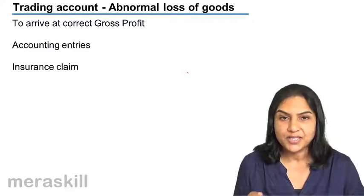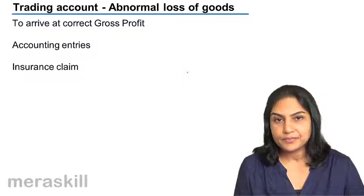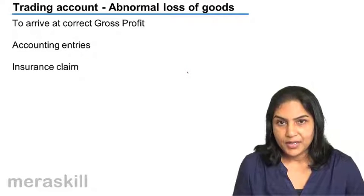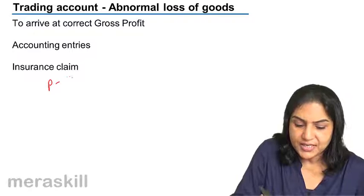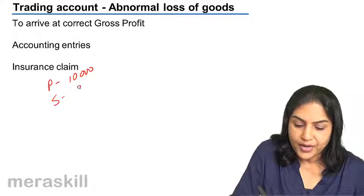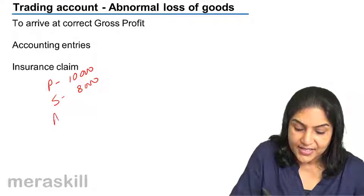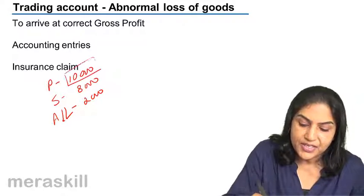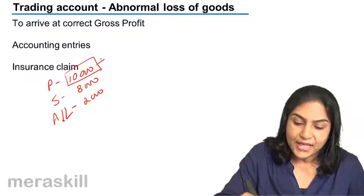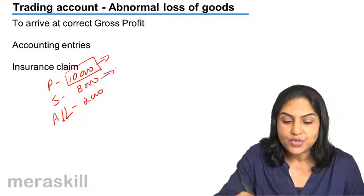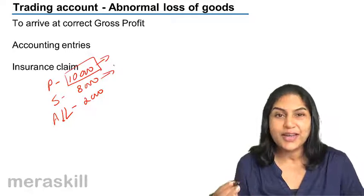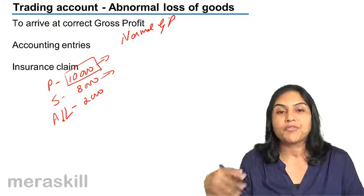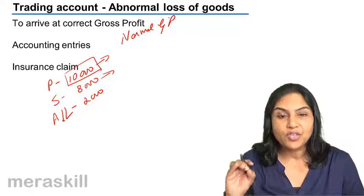Gross profit — how do we ascertain it? Units sold, we compare it with the same number of units purchased. Therefore, if we have purchased 10,000 units and we have sold 8,000 units, and let us say there is an abnormal loss of the remaining 2,000 units, would it be correct to compare 10,000 units purchased with 8,000 units sold? This would not give us the correct gross profit because we want to arrive at normal gross profit, not a gross profit after certain abnormal circumstances. We want to find out the normal gross profit.